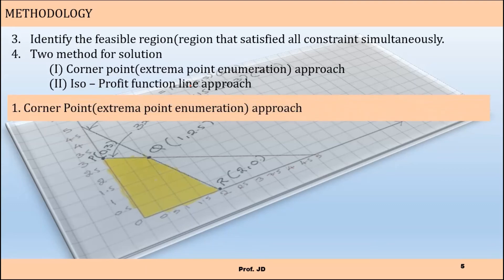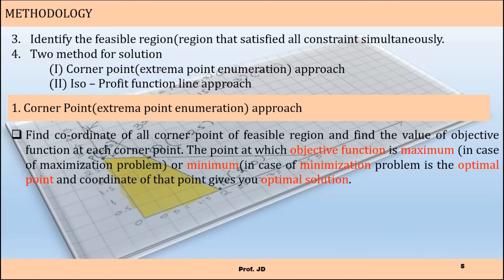In the corner point approach, find the coordinates of all the corner points of the feasible region and evaluate the objective function at each corner point. The point at which the objective function is maximum — in case of a maximization problem — or minimum — in case of a minimization problem — is the optimal point, and its coordinates give you the optimal solution. This is the simplest method to find the optimal solution using the graphical method.